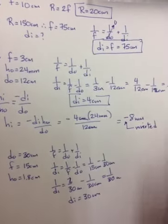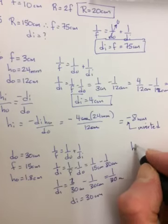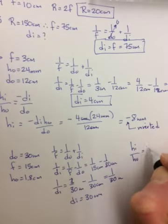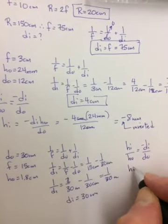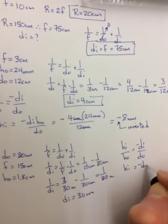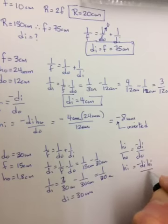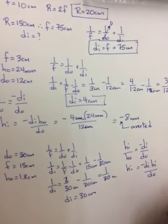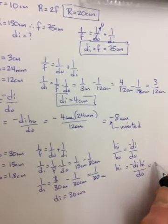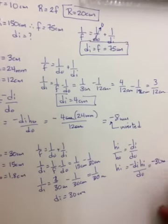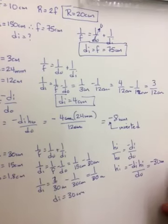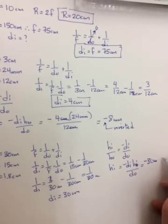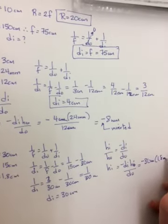And then it wants to know how high. So HI over HO equals negative DI over DO. Bring your HO up. HI is equal to negative DI HO over DO. Fill in your numbers. Negative 30 centimeters times 1.8 centimeters divided by 30 centimeters. HI is equal to negative 1.8 centimeters.